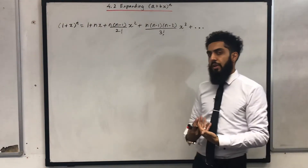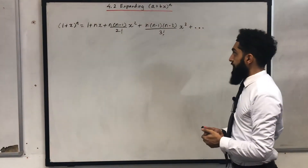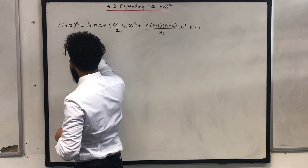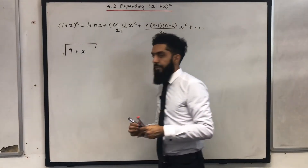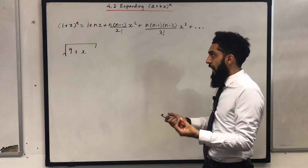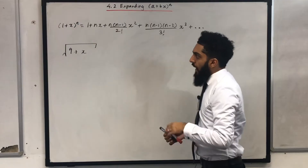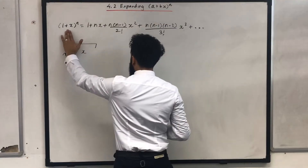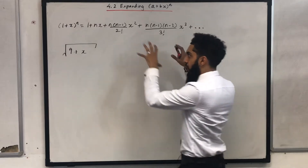I would say try to memorise the formula rather than going back to the formula booklet, which will take time. Suppose I had something like this: square root of (9 + x). I want to expand this up until the x cubed term, or maybe the x to the power 4 term, depending on what they say in the exam. Now the issue is that over here I've got 9, but in this particular form my first term needs to be 1, so this looks a bit tricky — I can't really use the formula at the moment.